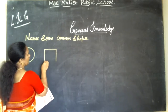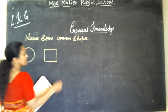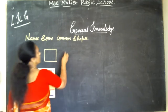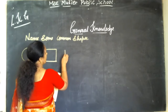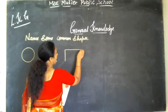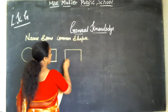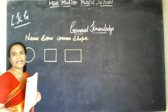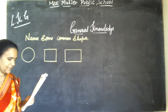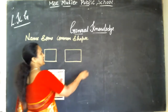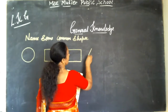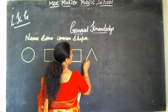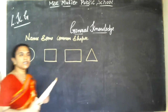What is this? Square. Then comes rectangle. What is this? Rectangle. And the last is triangle. What is the shape? Triangle.